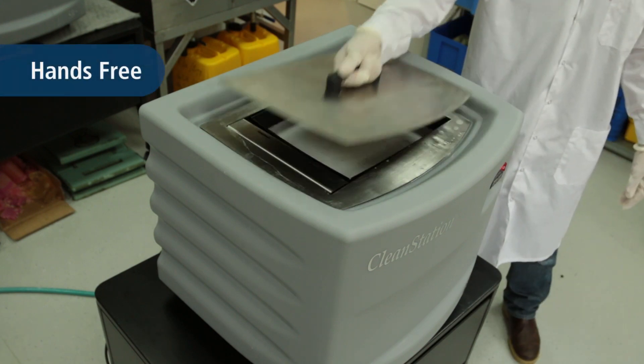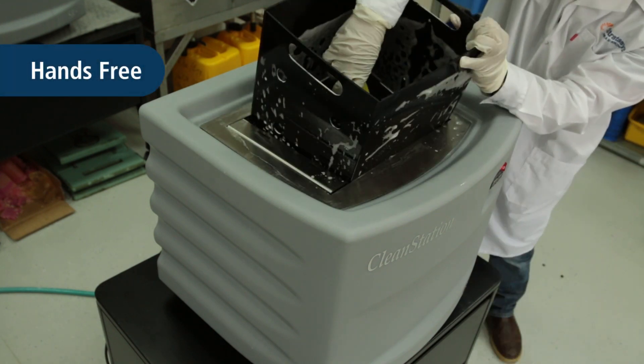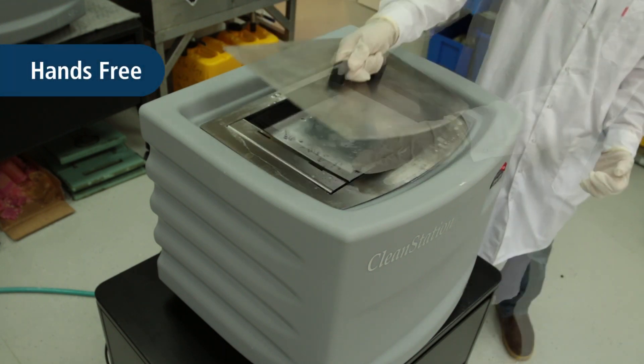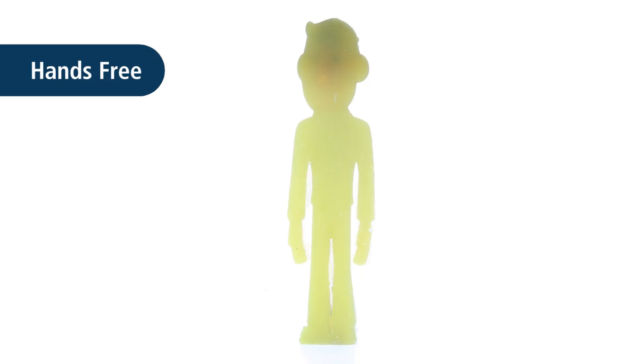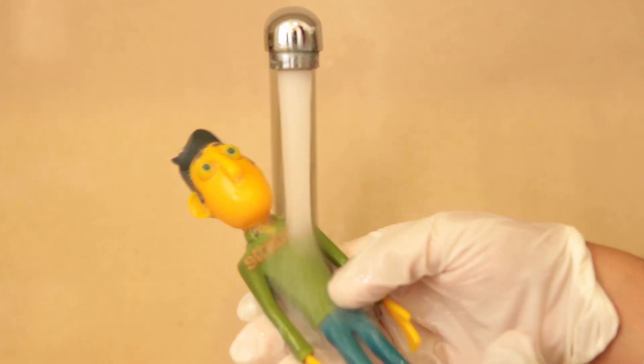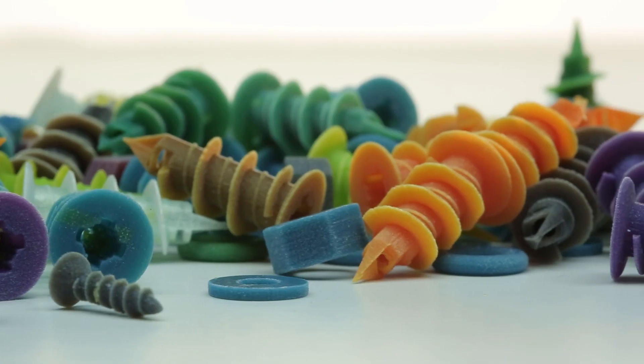Let's begin with the hands-free method. Place the 3D printed part inside the cleaning solution. Once the support material has been dissolved, rinse the part in tap water. This process is especially helpful for large batches of small parts.